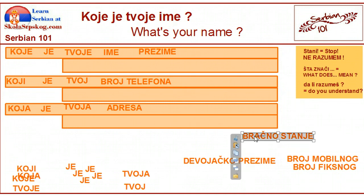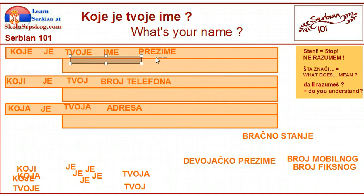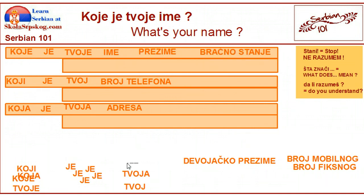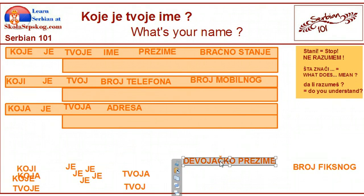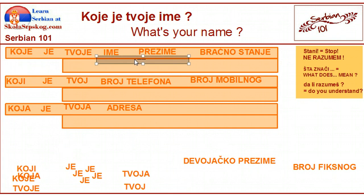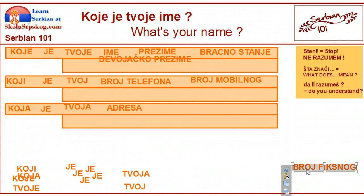Bračno stanje. Koje je tvoje bračno stanje? Broj mobilnog. Koji je tvoj broj mobilnog? Koji je tvoj broj mobilnog? Devojačko prezime. Koje je tvoje devojačko prezime? Broj fiksnog — landline. Koji je tvoj broj fiksni?